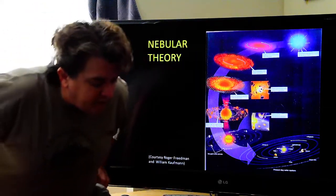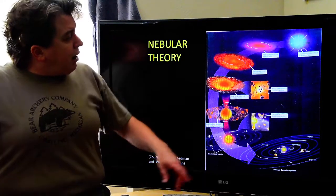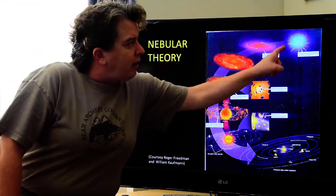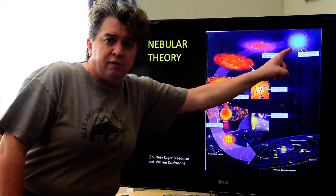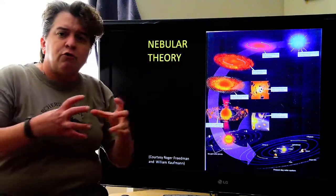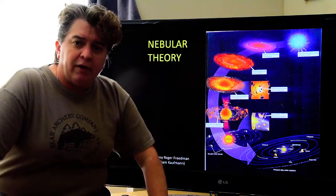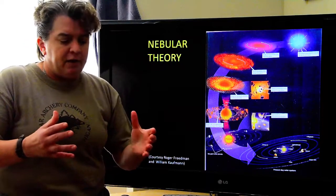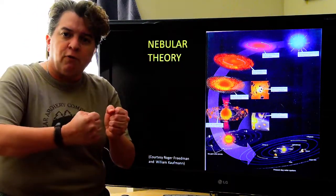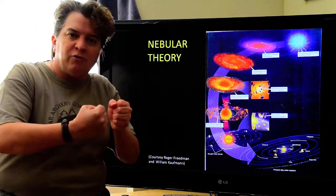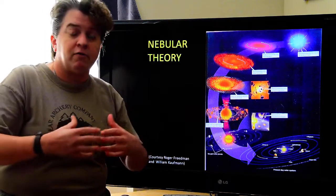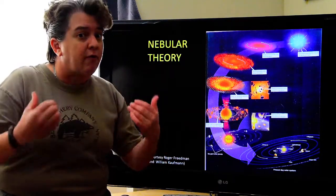So, what happens in the nebular theory? We have our cloud of gas and dust out in space. And it starts contracting under the force of gravity. Because what gravity is, it's actually an attraction force between two different objects. Every object in the universe, as long as it has mass, has gravity.